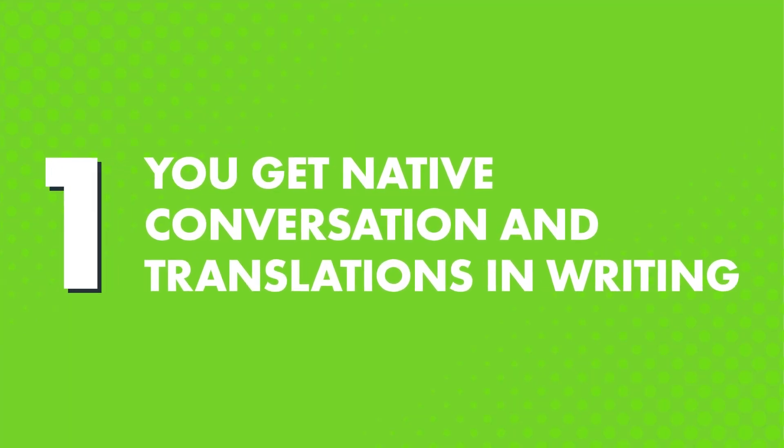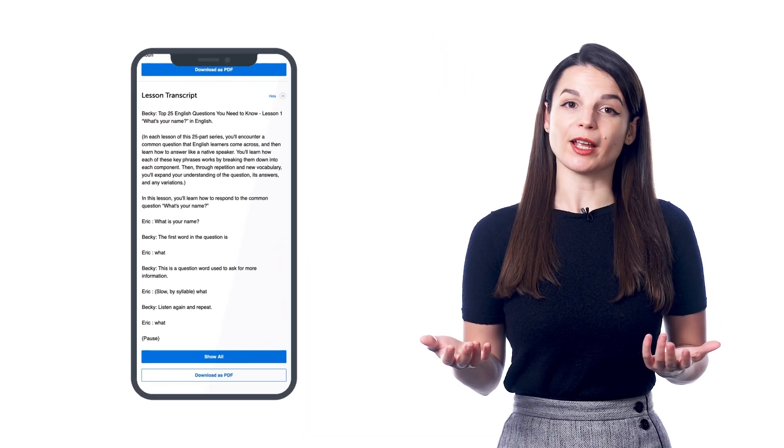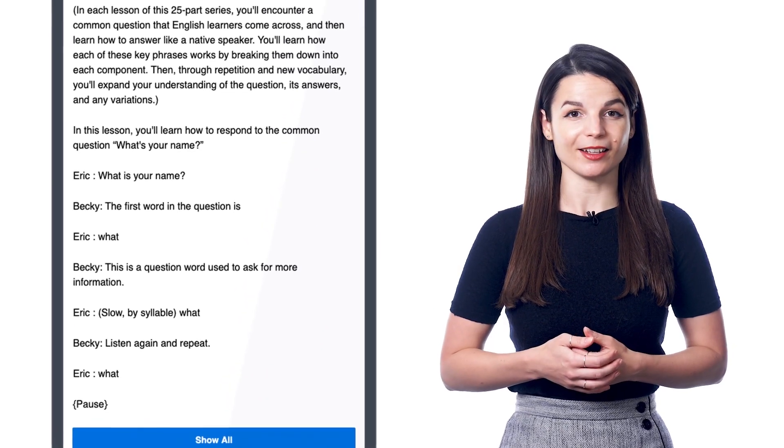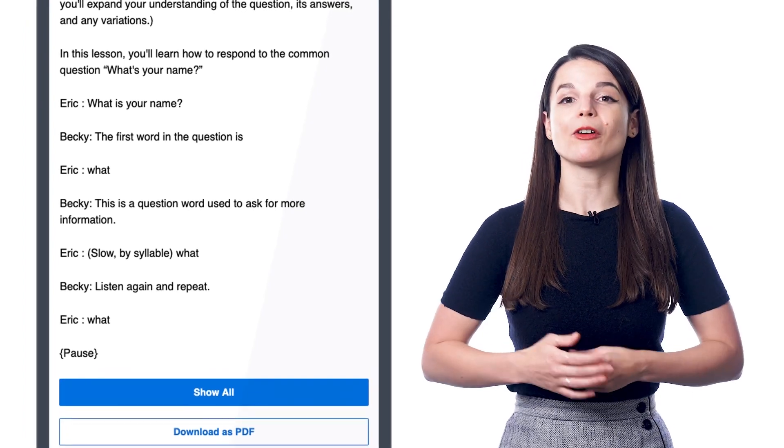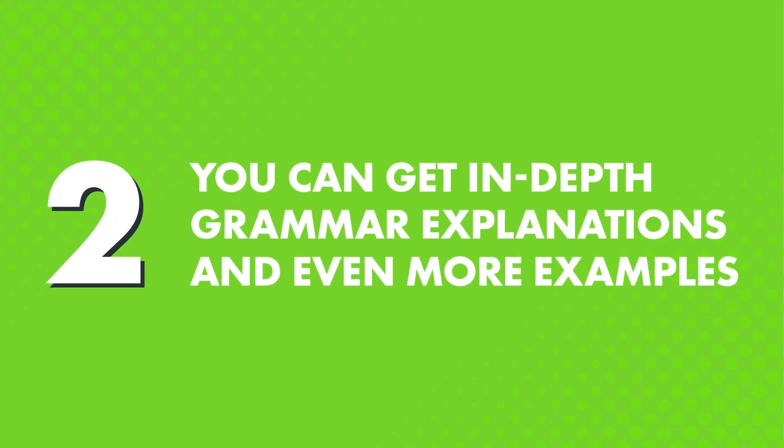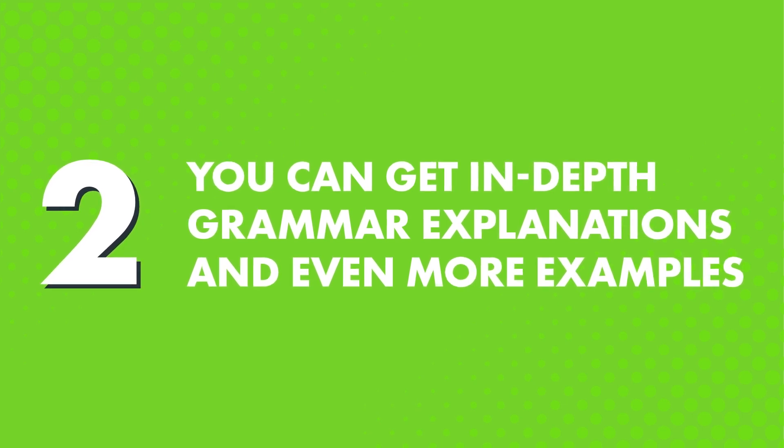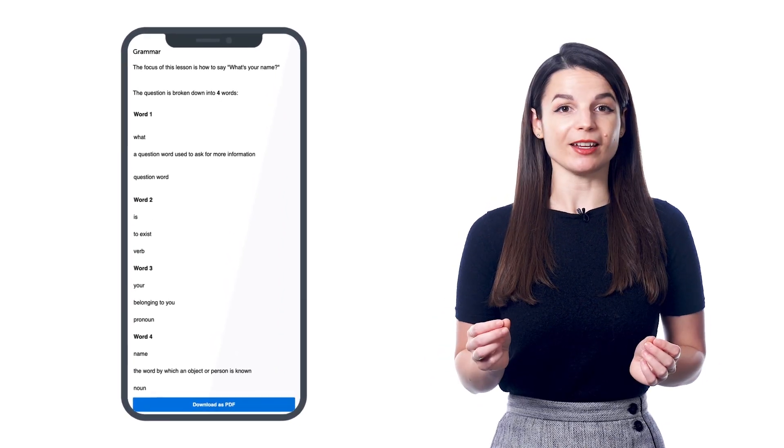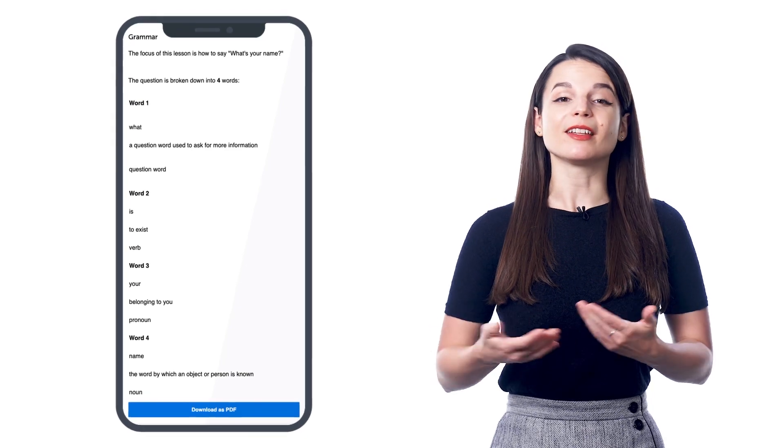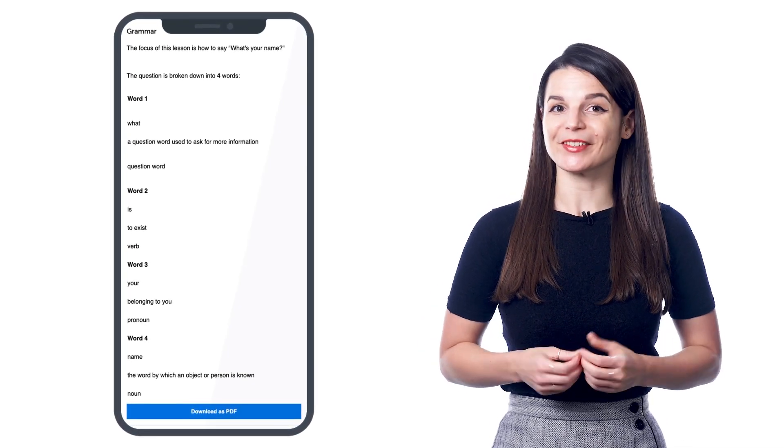First, you get native conversation and translations in writing. Imagine listening to a conversation in real life. Native speakers speak fast, so you might not understand every single word. But if you have a transcript to follow along with, you can easily pick every word apart and start understanding what the native speakers say. And since you learn a new conversation in every lesson, that's exactly why you get our lesson notes for every lesson, so you can quickly grasp and understand native speech. Second, you can get in-depth grammar explanations and even more examples. One of the best ways to learn grammar is to get used to it through practice and lots of exposure. And with our audio and video lessons, you'll get the grammar rules explained. But if you want the extra exposure, check out the lesson notes for the extra review and even more examples that are not available in the lesson.